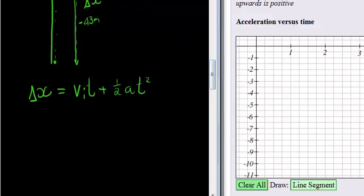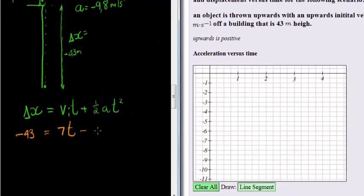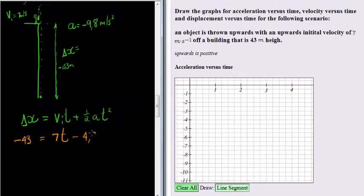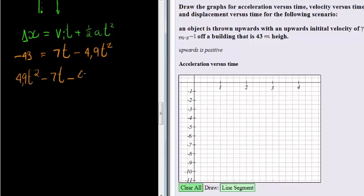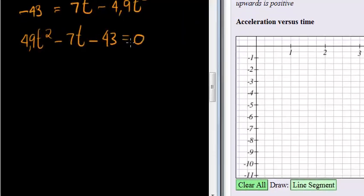Let's go substitute in there and see what we get. We know that negative 43 is equal to 7t plus a half times negative 4.9t squared. To solve that, you can see it's a quadratic equation. So we get 4.9t squared minus 7t minus 43 is equal to 0.